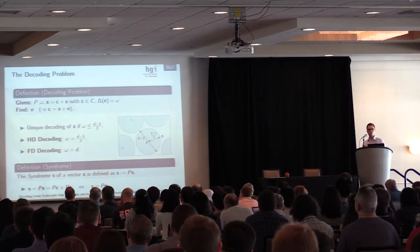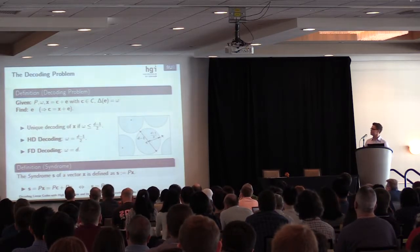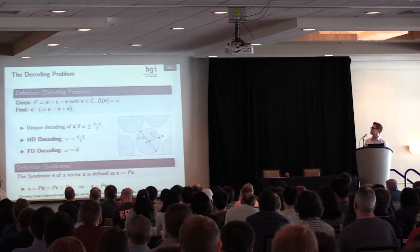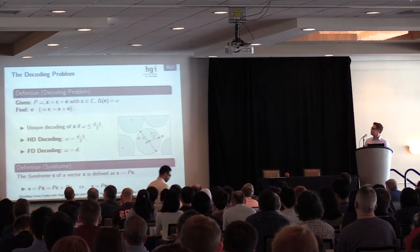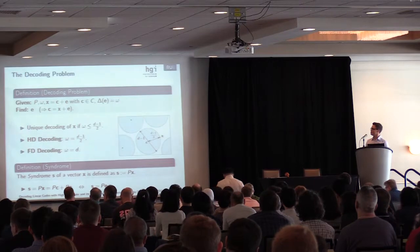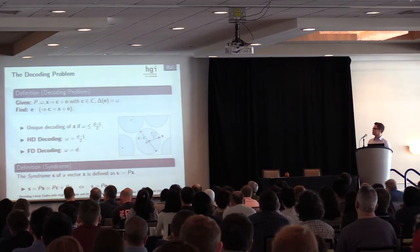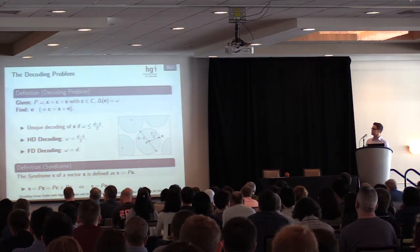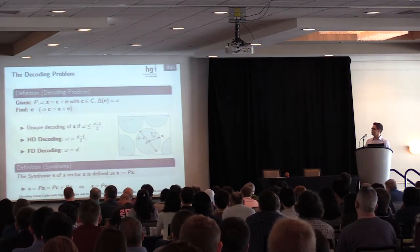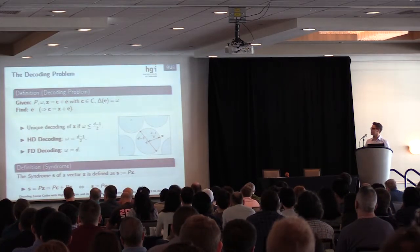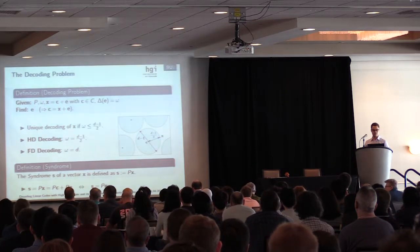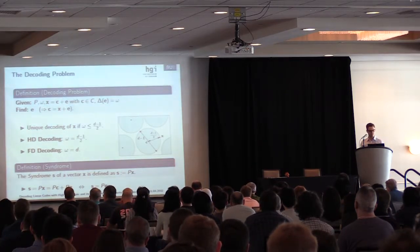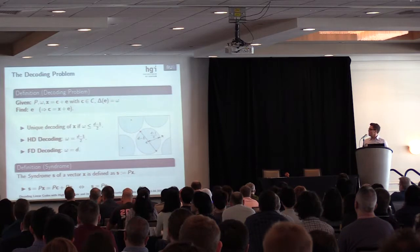The decoding problem is for this talk defined as follows. We are given a parity check matrix H which defines the linear code. We are also given some Hamming weight omega and a vector x, which can be written as the sum of the code word c and some error vector e, which has Hamming weight omega. The target is to find this vector e, because then we can recover c via x plus e.